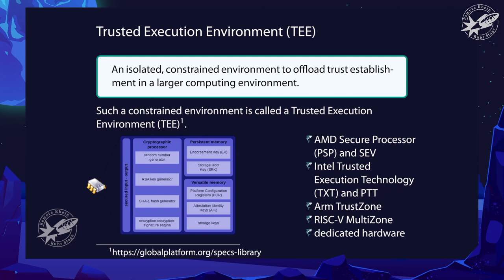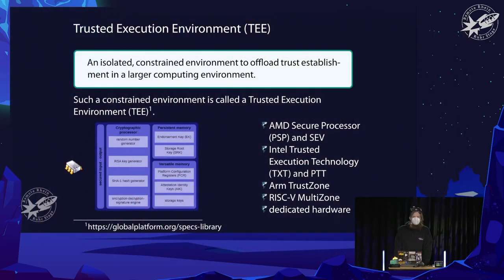There are many hardware implementations of the TPM, but there are also implementations as part of a Trusted Execution Environment. There are implementations from AMD and Intel, which most people know from their processors, and from ARM, mainly seen in phones but also appearing elsewhere. There's also a new ISA called RISC-V — the concept is being transferred across platforms.